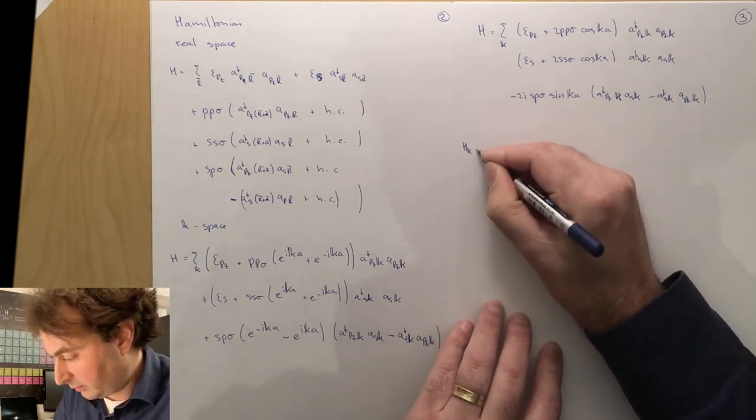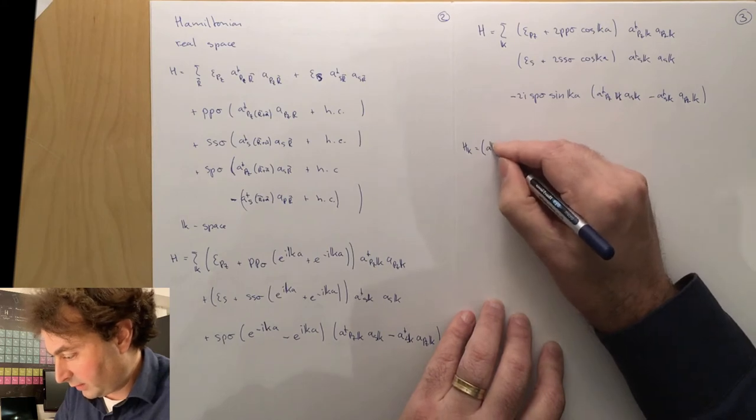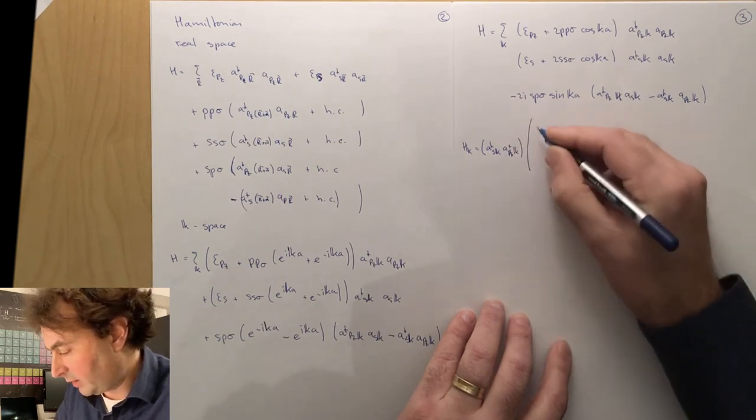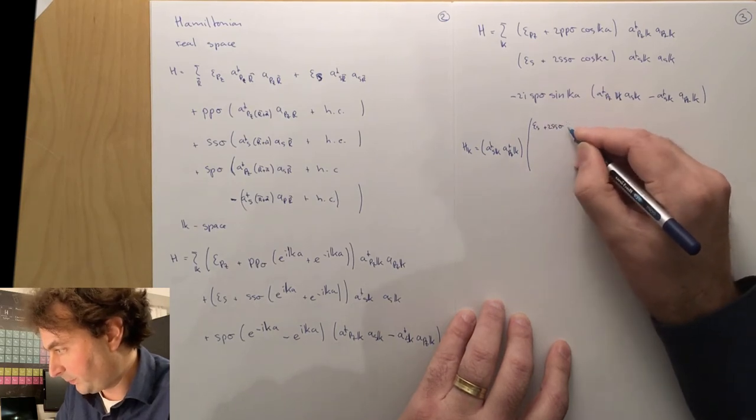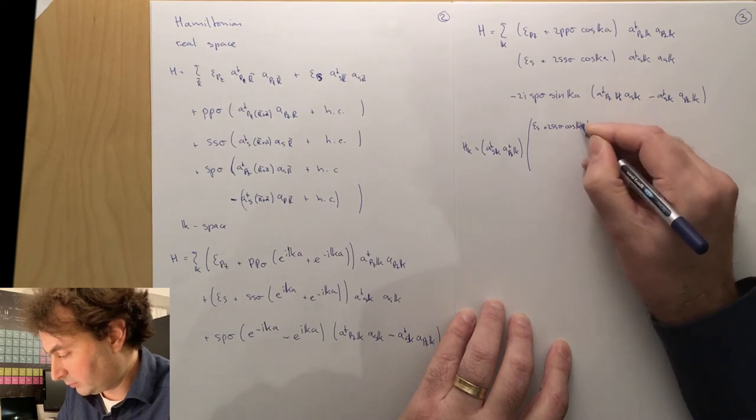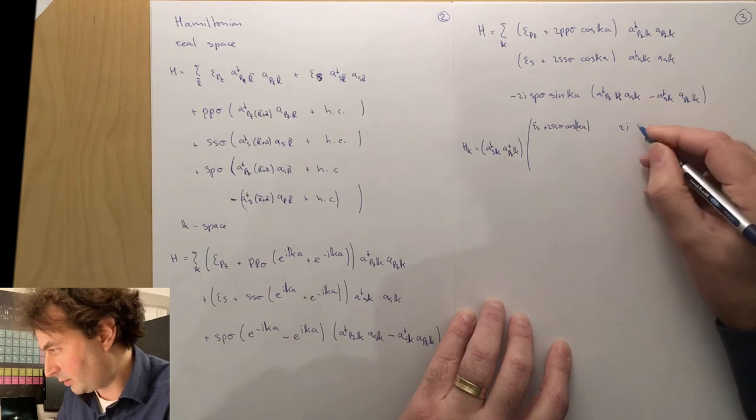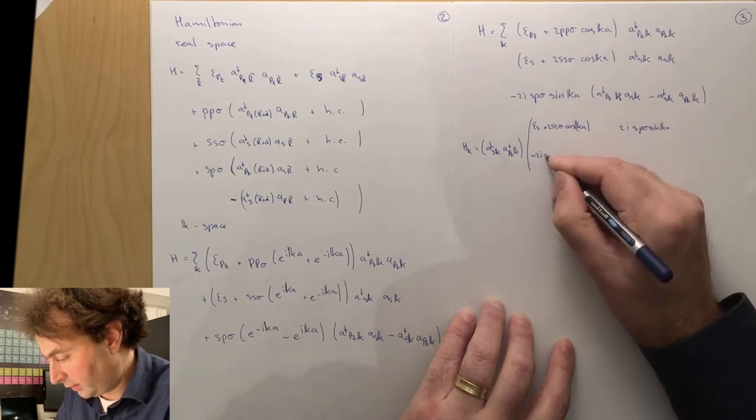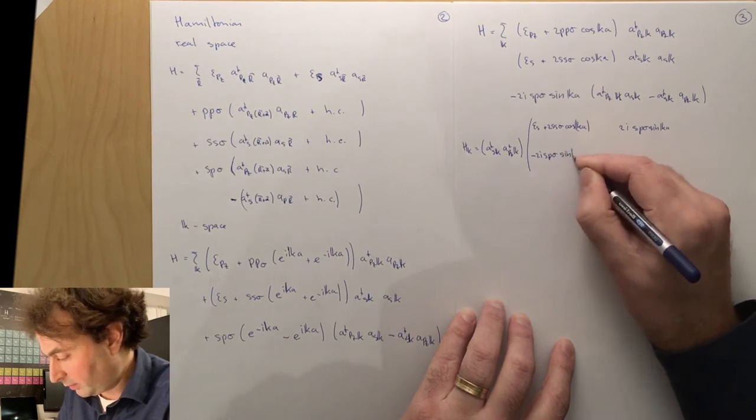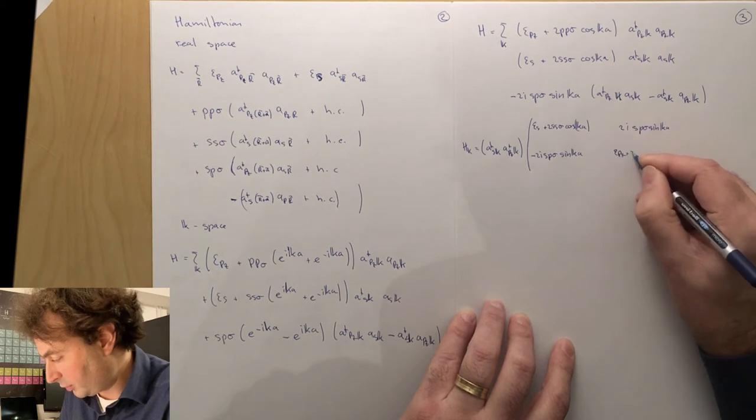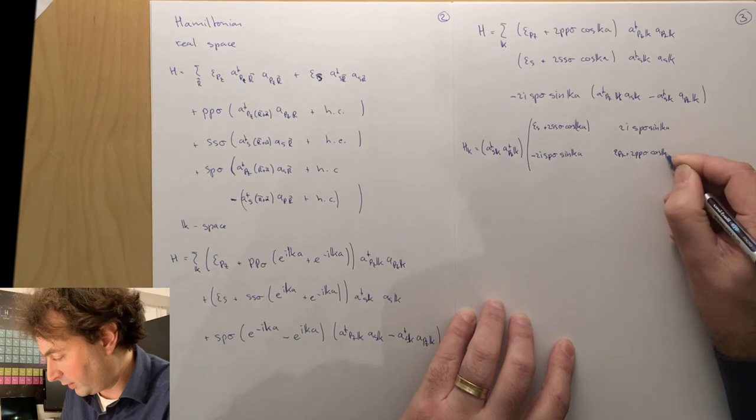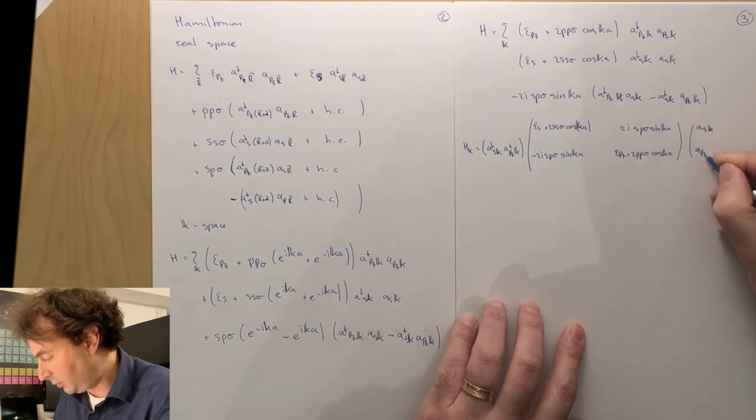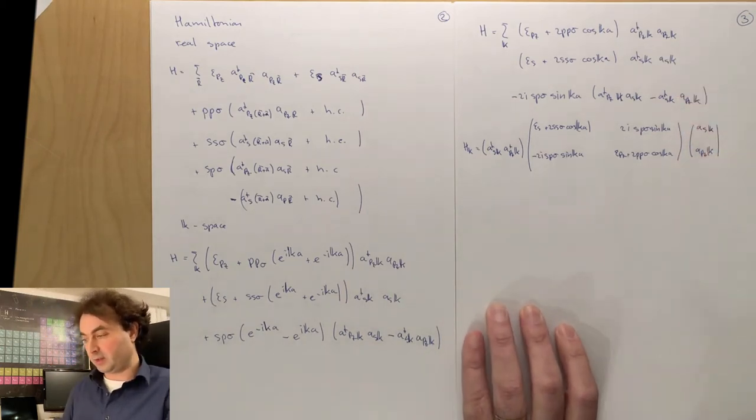We can write down our Hamiltonian as a matrix: a dagger s k, a dagger pz k, and then the matrix epsilon s plus 2*ss sigma*cos(ka), the interaction between them 2i*sp sigma*sin(ka), minus 2i*sp sigma*sin(ka), and epsilon pz plus 2*pp sigma*cos(ka) for the dispersion of the p orbital, and then of course as k, apz k for the annihilation such that we have the same Hamiltonian as we had before.